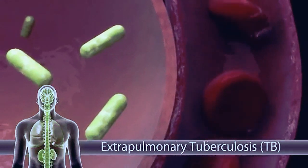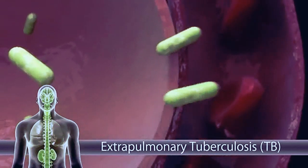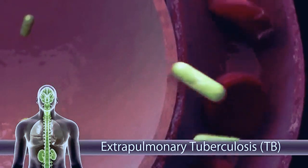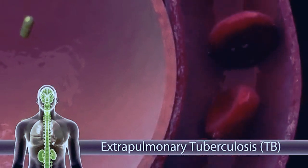TB bacteria can also enter the bloodstream and travel to other parts of the body, causing extra pulmonary TB.